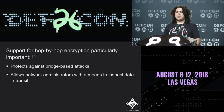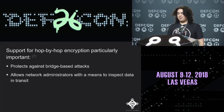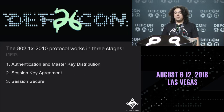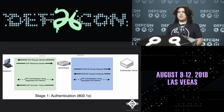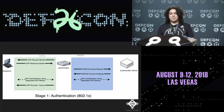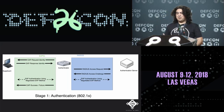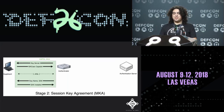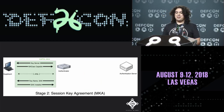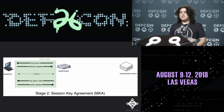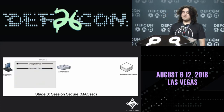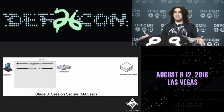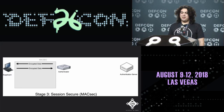802.1X-2010 also allows network administrators to inspect data in transit since encryption is hop-by-hop. It works in three stages: stage one is authentication and master key distribution using the standard 802.1X EAP process; stage two is session key agreement where the authenticator establishes MACsec capability and installs the SAK; stage three is session secure where everything is encrypted at layer 2 with MACsec fully enabled.